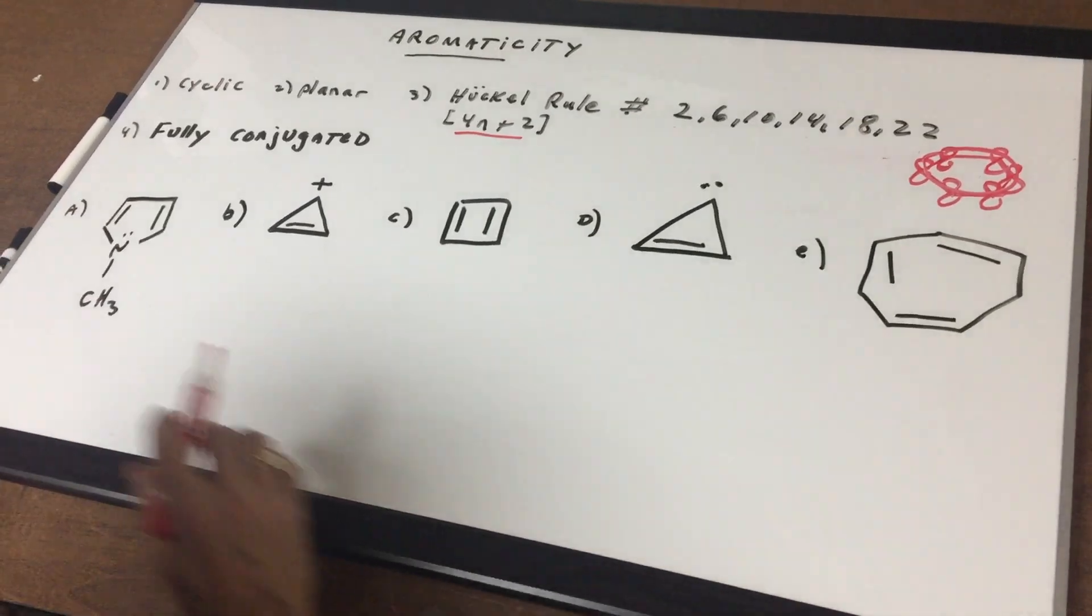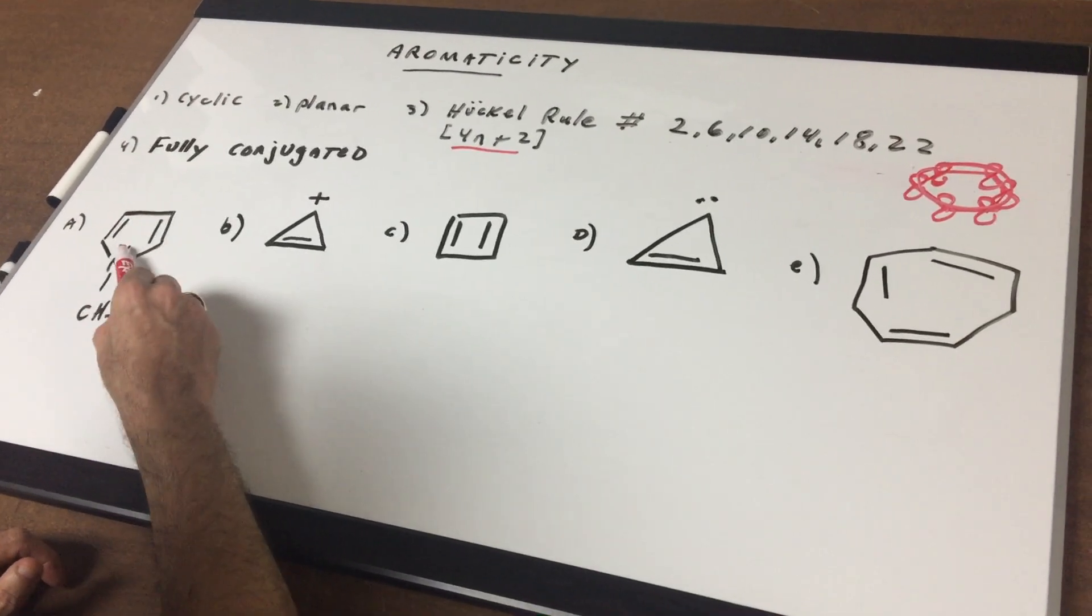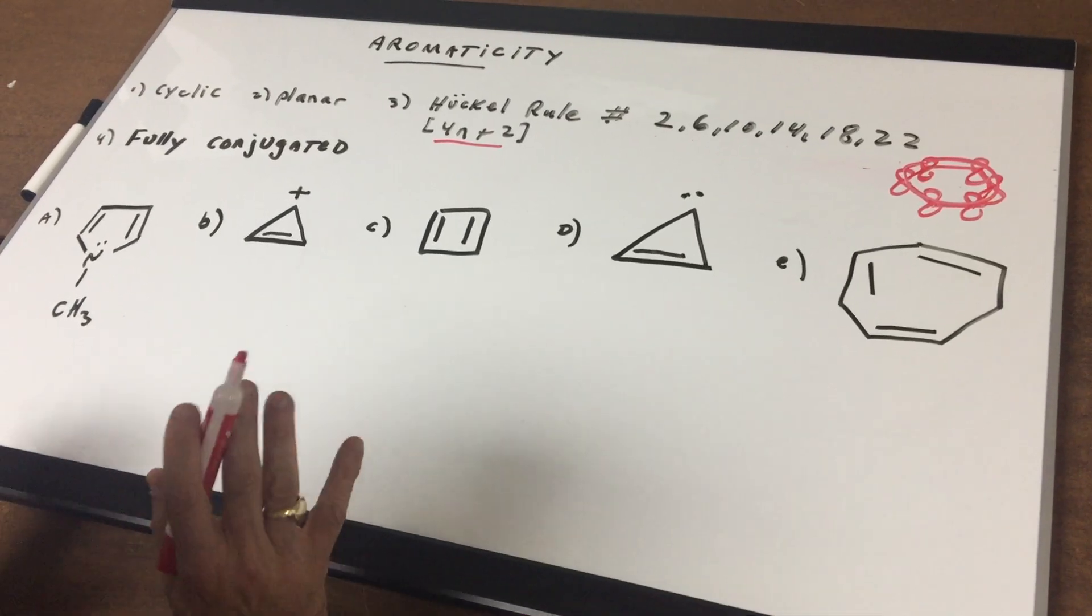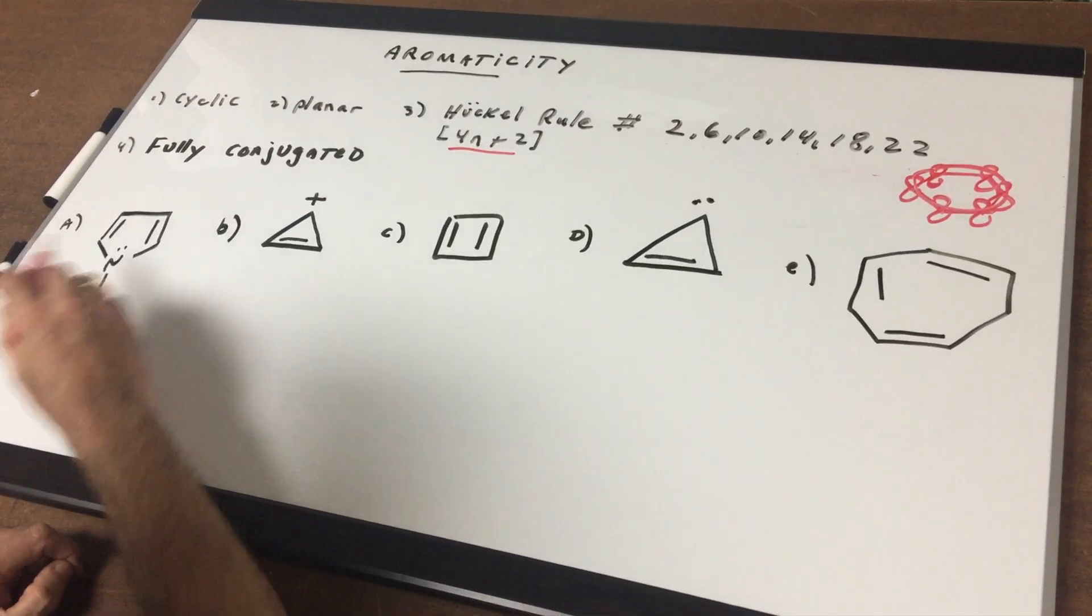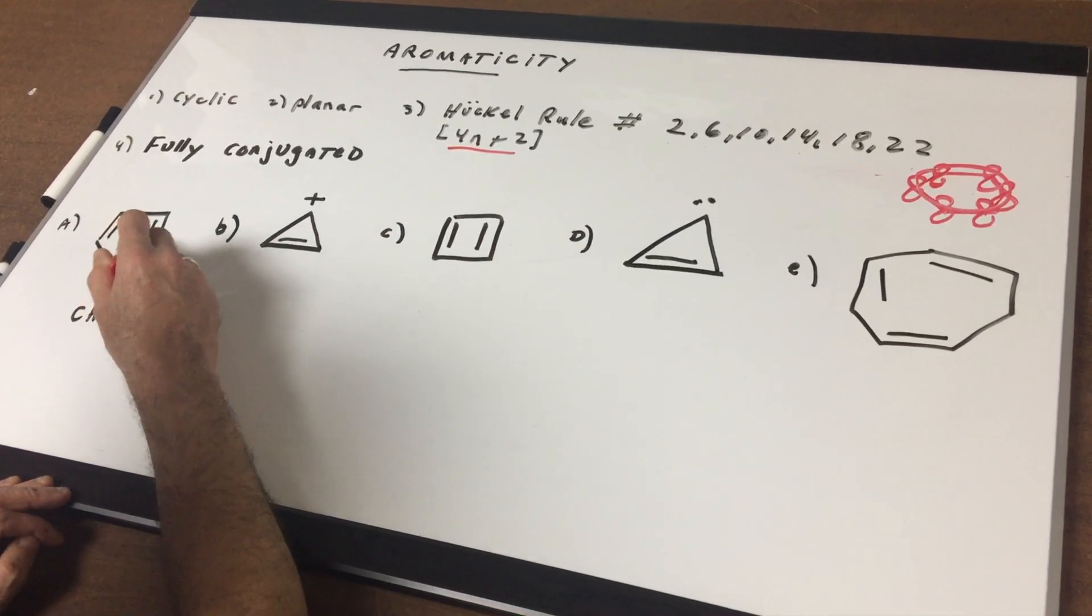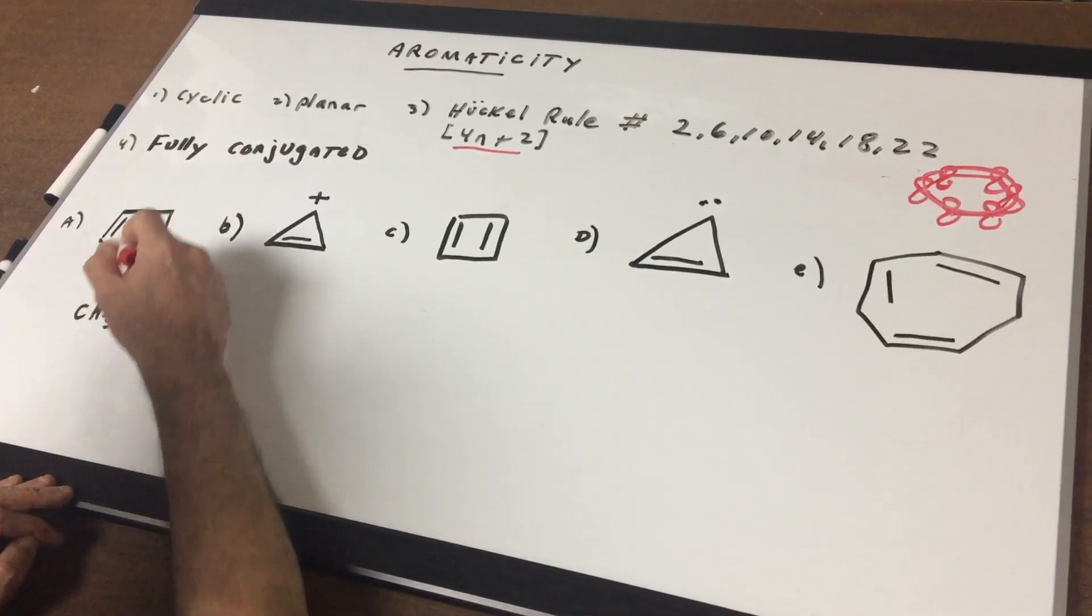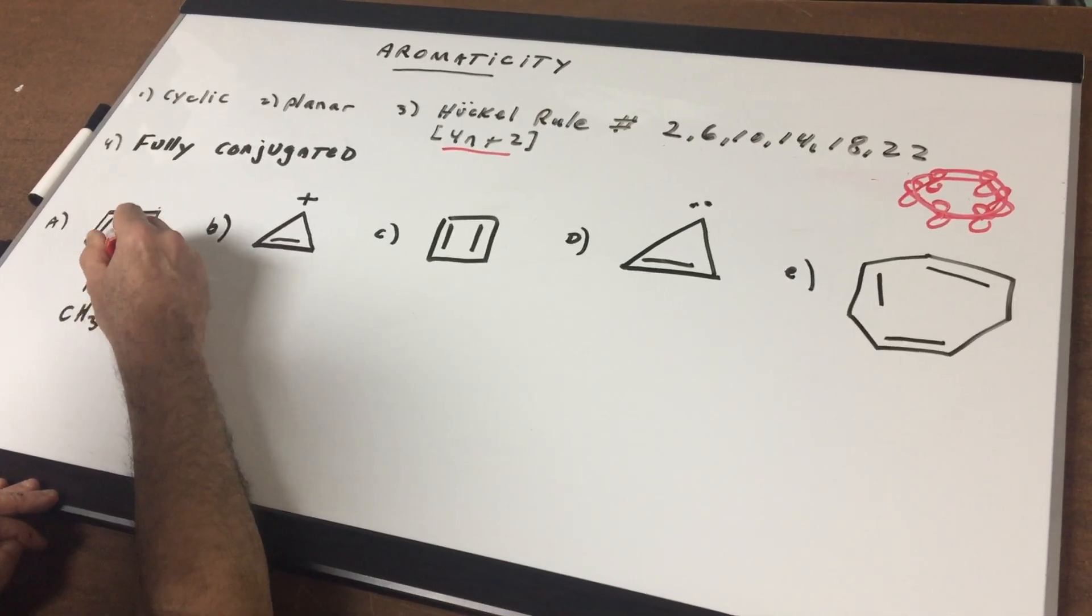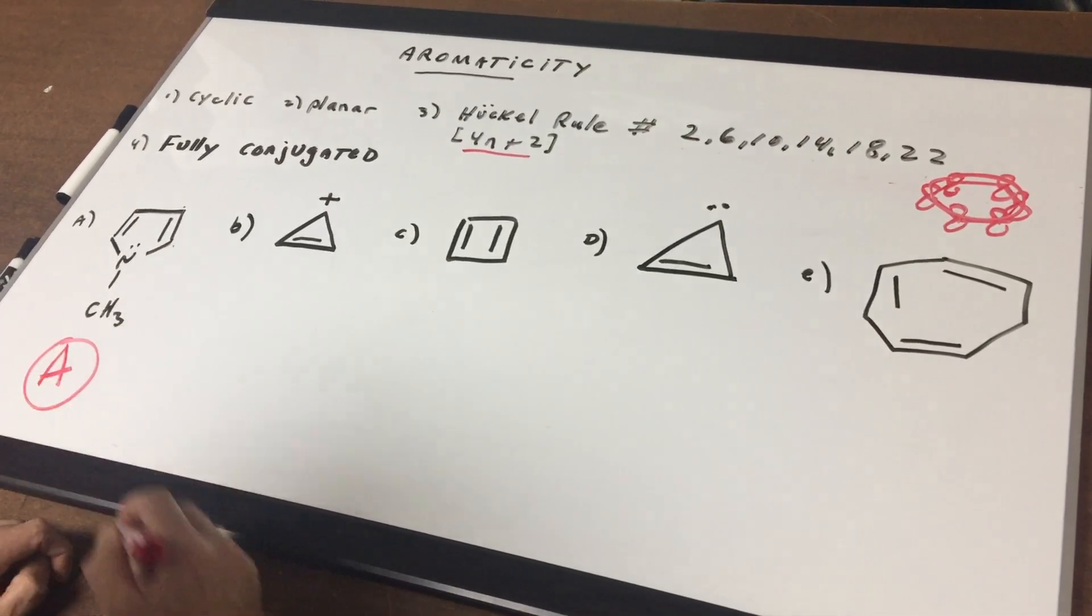Let's try a few examples. In letter A, we have 2, 4, and the dots count as 6. So this has 6 pi electrons. We're going to assume most things are planar unless otherwise known. So this is cyclic. It is planar. There is a Huckel rule number of 6, and I'm hoping you can see that every atom here would be fully conjugated. So you've got p orbitals here, here, here, and of course this nitrogen, these electrons are in a p orbital. So this would be considered aromatic.